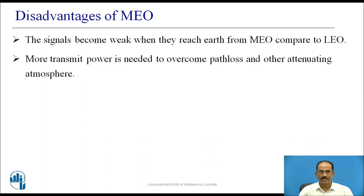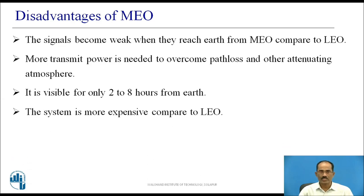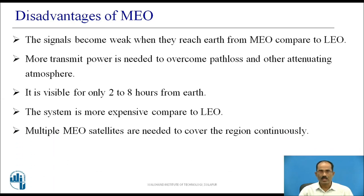Hence, more transmit power is needed to cover path loss and other attenuating atmosphere effects. MEO satellites are visible for only 2 to 8 hours from earth, so satellites are required to be tracked from the earth due to their rotation. The system is more expensive compared to LEO, and multiple MEO satellites are needed to cover the region continuously.